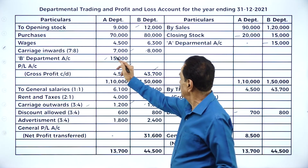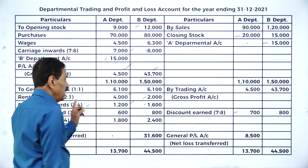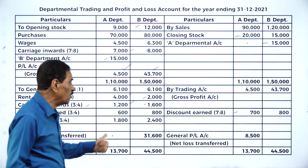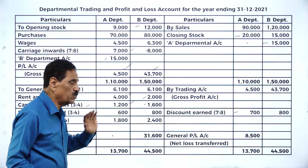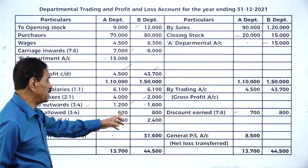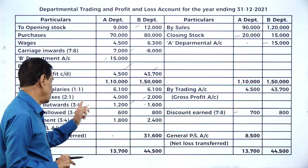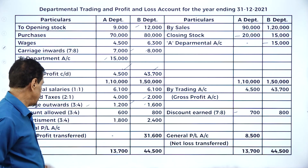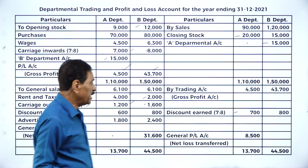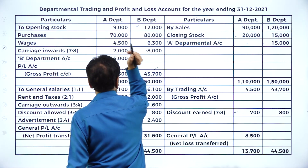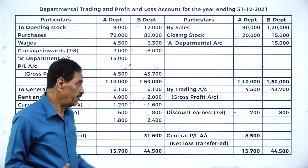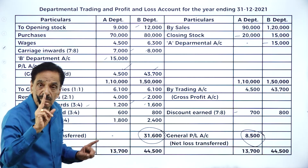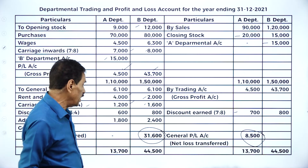To summarize the allocations: sales 90,000 and 1,20,000 are in ratio 3:4. Carriage inward on purchases in ratio 7:8 — 15,000 divided gives 7,000 and 8,000. General salary equally: 12,200 divided gives 6,100 each. Rent and taxes 6,000 in ratio 2:1 gives 4,000 and 2,000. Carriage outward 2,800 in ratio 3:7 gives 1,200 and 1,600. Discount allowed 3:4 gives 600 and 800 or 1,800 and 2,400. Discount earned 1,500 in ratio 7:8 gives 700 and 800. The difference is a loss of 8,500 for A; profit earned by B is 31,600.